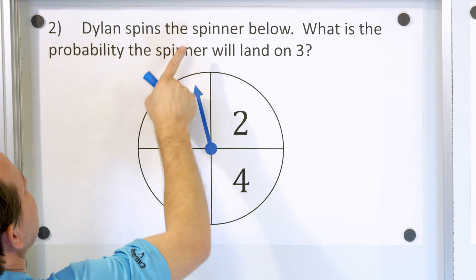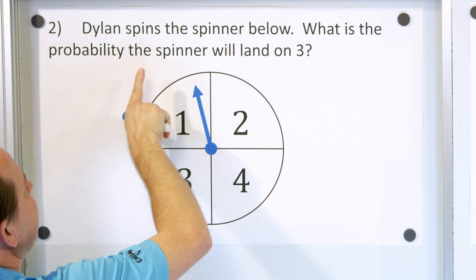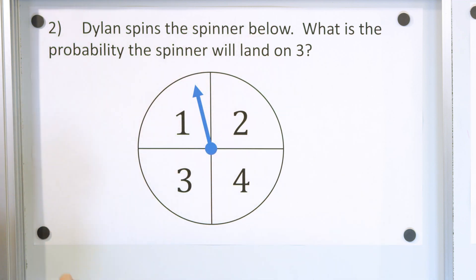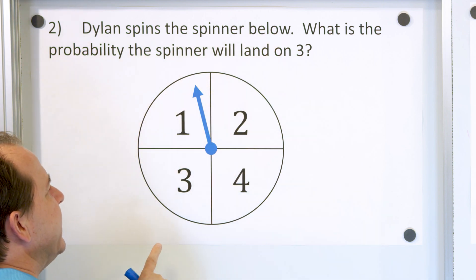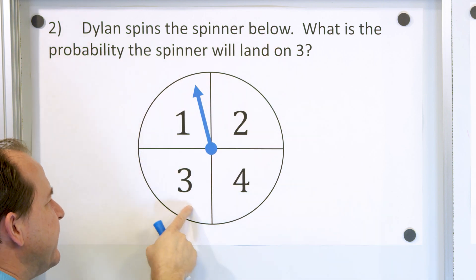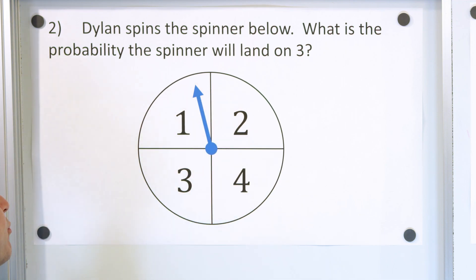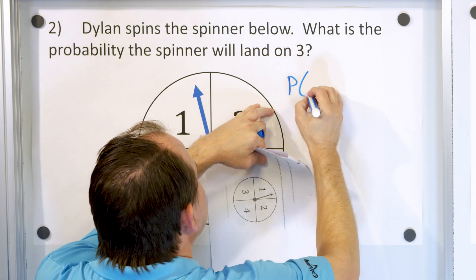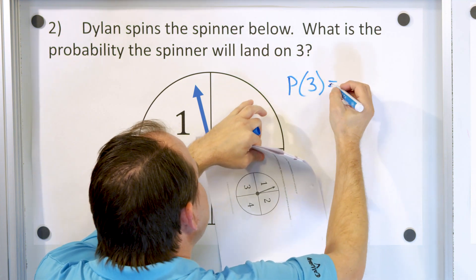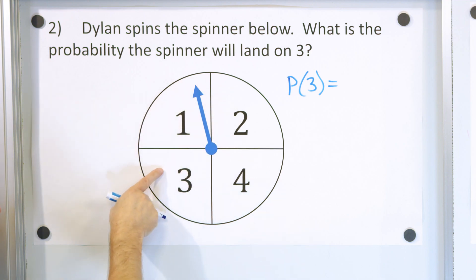Problem number two: Dylan spins the spinner below. What is the probability the spinner will land on the number three? We have to figure out how many ways we can land on the number three. You can see there's only one square out of four that satisfies that condition. So the probability of landing on the number three...